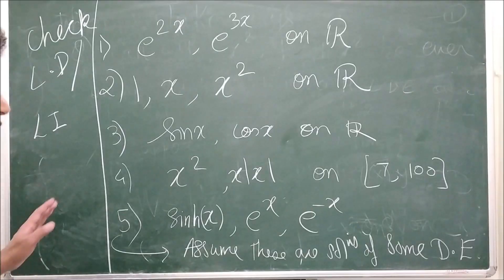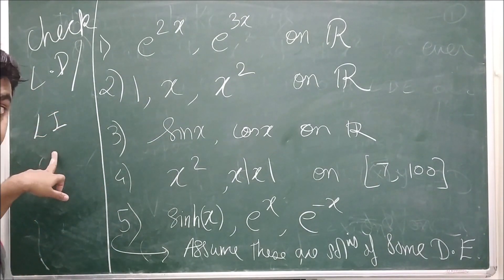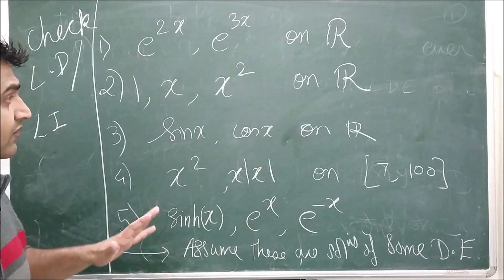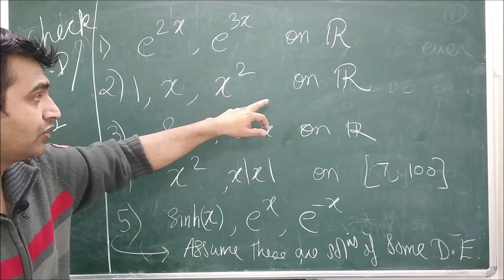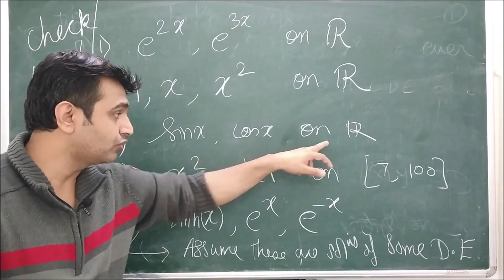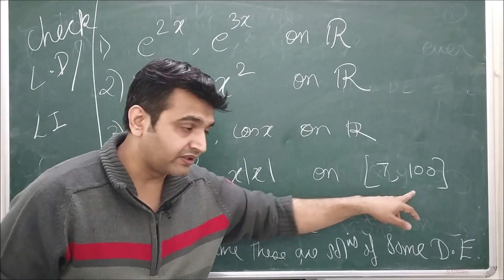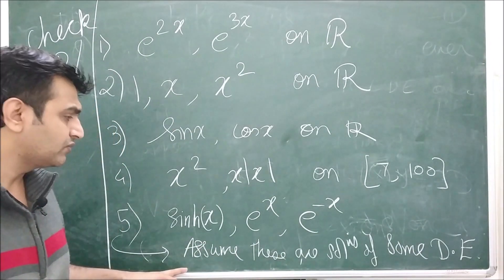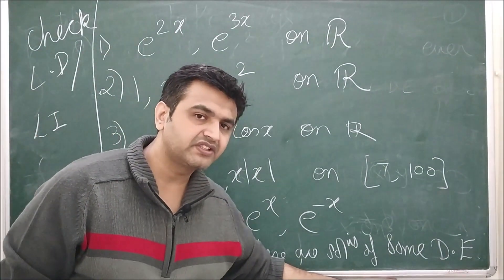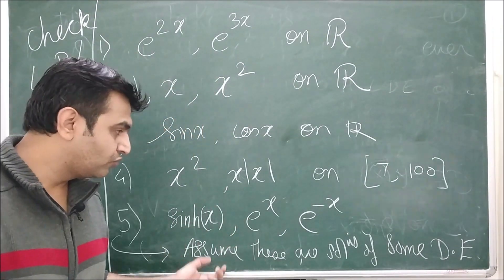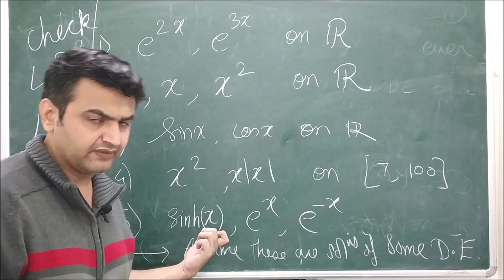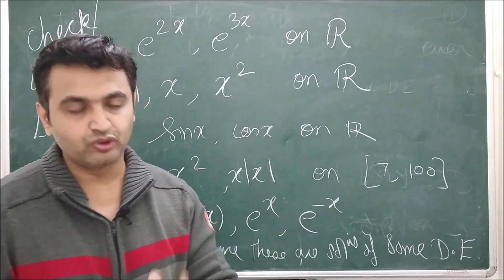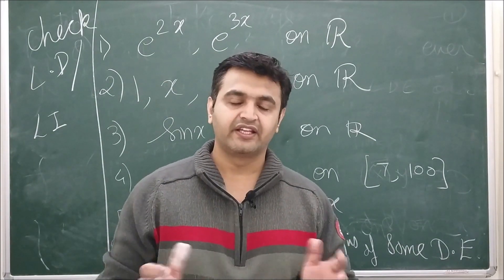For practice, check whether the following are linearly independent or dependent: (1) two given functions over an interval (Wronskian non-zero → independent), (2) three functions on ℝ using a 3×3 Wronskian, (3) sin x and cos x on ℝ, (4) x² and x|x| on the interval (7, 100), (5) sinh x, eˣ, and e⁻ˣ. Post your answers in the comments. Thank you and have a nice day.